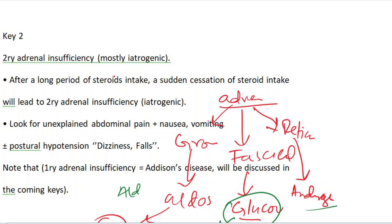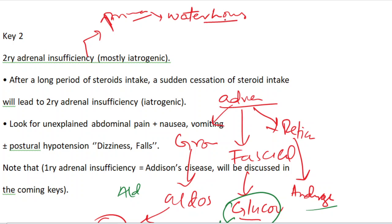Adrenal insufficiency can occur in two ways. If it is primary, it is called Waterhouse-Friderichsen syndrome — an acute primary adrenal insufficiency due to adrenal hemorrhage. This is often caused by Neisseria meningitidis septicemia or DIC, which can cause hemorrhage into the adrenal glands, causing them to lose functionality.